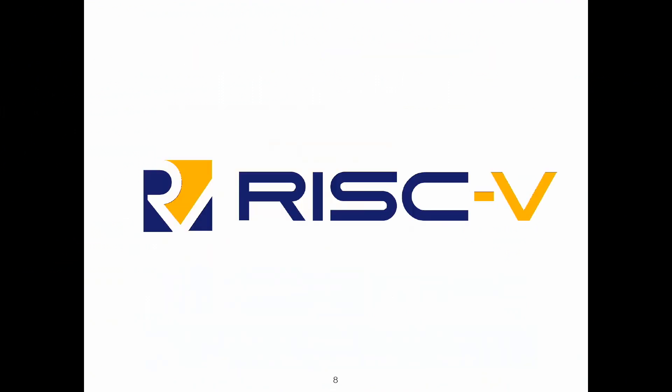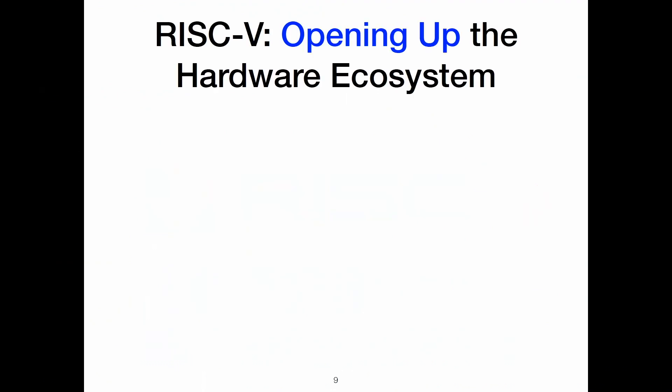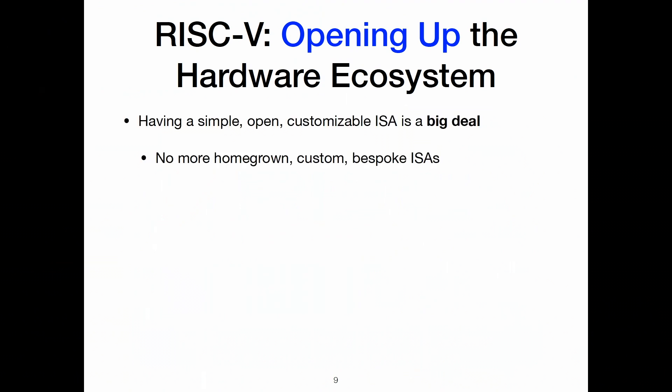First, I'll talk about RISC-V. We're at the RISC-V workshop, so of course I'm going to plug RISC-V for doing secure systems. RISC-V, as we've heard in the last couple of days, is opening up the hardware ecosystem. Having a simple, open, customizable ISA is a big deal. There's no more homegrown, custom, bespoke ISAs. Everyone can standardize on the one ISA that's supposed to span everything — the goal to have one ISA that spans all computing devices. And we can all work together on standardizing interfaces for extensions that we need.